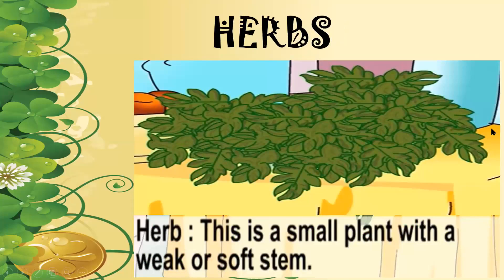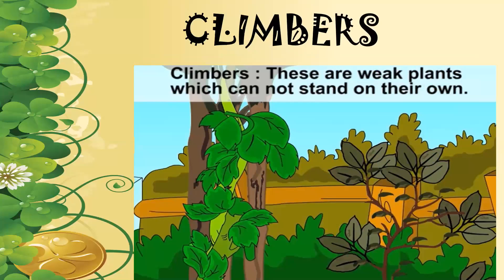Herbs are small plants with a weak or soft stem. You must have seen herbs such as coriander and mint — these are known as herbs which are very soft and delicate. Climbers are weak plants that cannot stand on their own — they need the support of a nearby plant or object to grow on. For example, the money plant is a climber; it takes support of a nearby wall or plant.